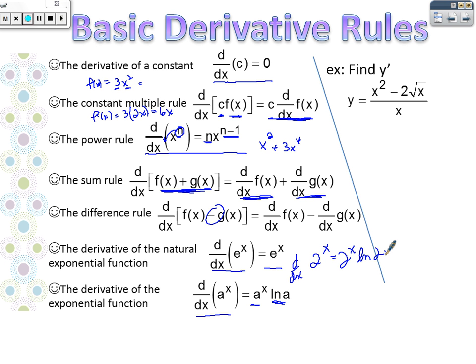2 to the x ln 2. You might wonder, wow, why is that different than the e to the x rule? Well, it's really not. This is just a shortcut rule.